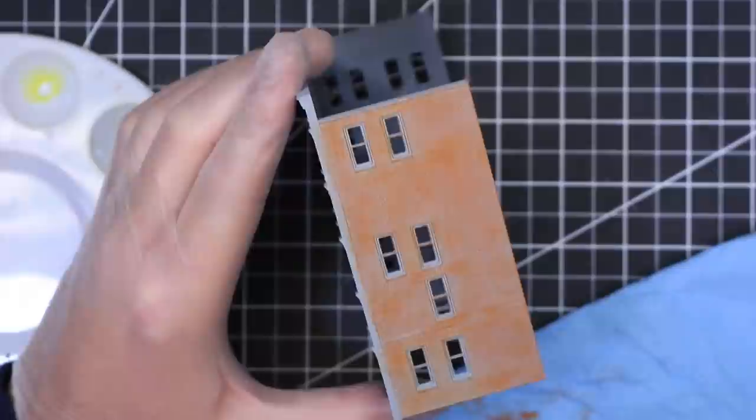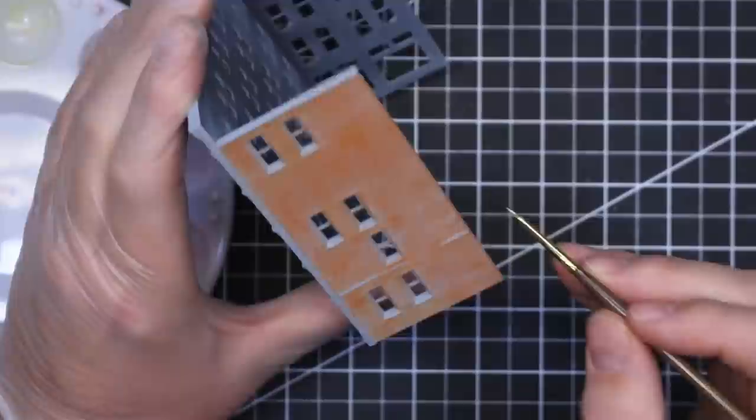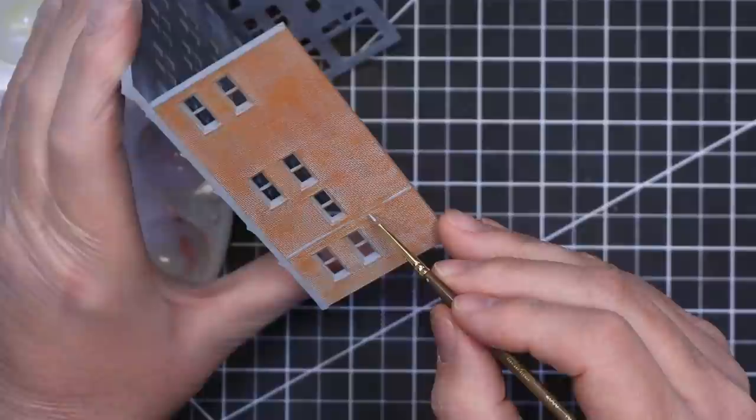The brick wall has an accent row that protrudes above the ground floor. I touched this up as well as the window sills with the blue-gray color.